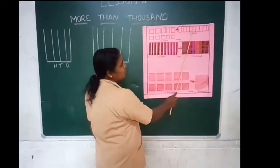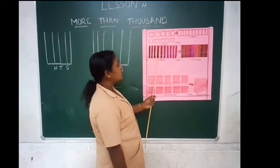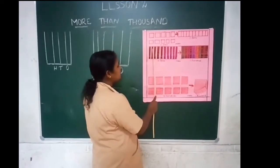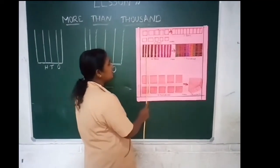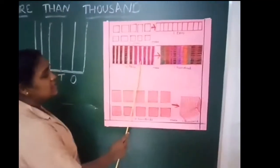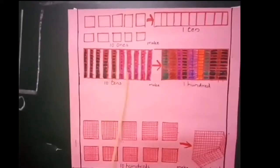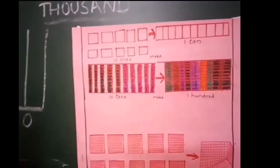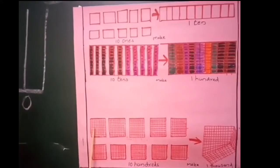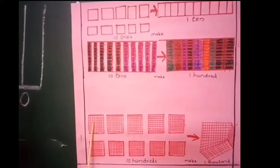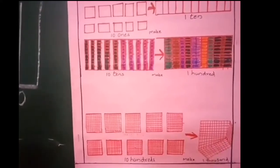Ten ones equals one ten. And here is ten tens. Each one represents ten — each one contains ten squares. So ten tens are here. Ten tens equals one hundred. And here is ten hundreds. Each box has one hundred squares. And ten hundreds equals one thousand.